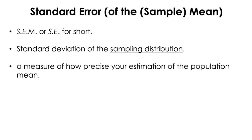The sample means will vary less from sample to sample by the square root of the sample size, according to the central limit theorem. So if you have a large sample size, your estimation of the population mean will become more and more precise. On the other hand, a large standard error of the mean (SEM) means that your sample might not be very representative of the population.